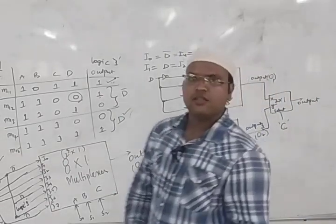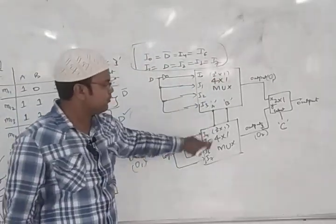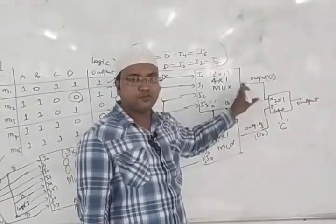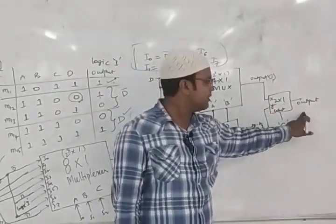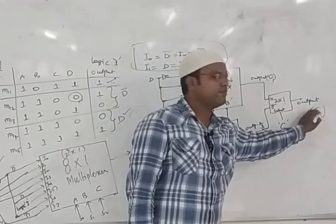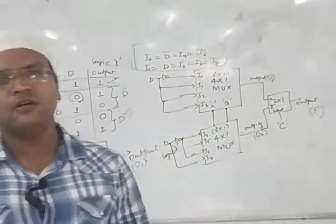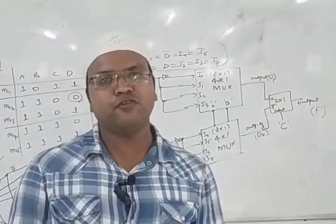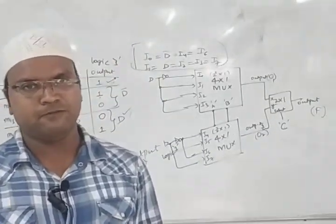So this is how the given conditions for the 8-to-1 multiplexer were modified into two 4-to-1 MUXes plus one 2-to-1 MUX. The outputs of the two 4-to-1 MUXes connect to the 2-to-1 MUX to give the final output — the boolean function F given in the question.